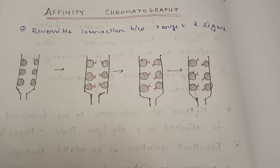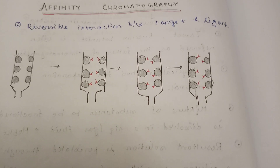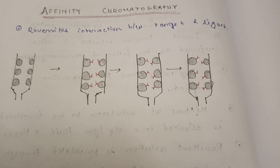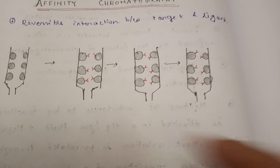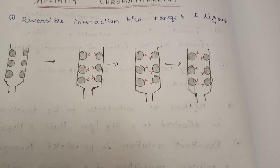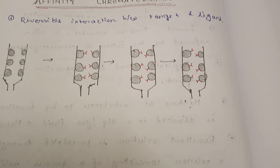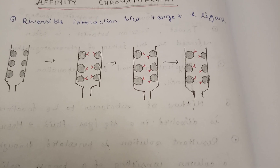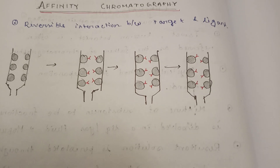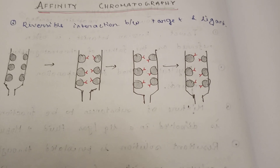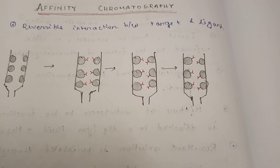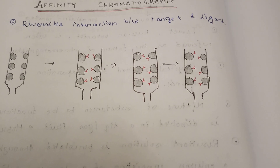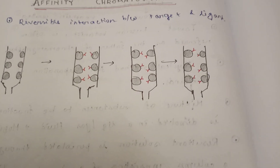The substance that will be purified will specifically and reversibly be adsorbed by the ligand. Let's say your ligand is an antibody — then the antigen will bind to the antibody part, that is your ligand part, specifically and reversibly. Then you have to wash it away. Samples are applied under favorable conditions for the specific binding to the ligand.